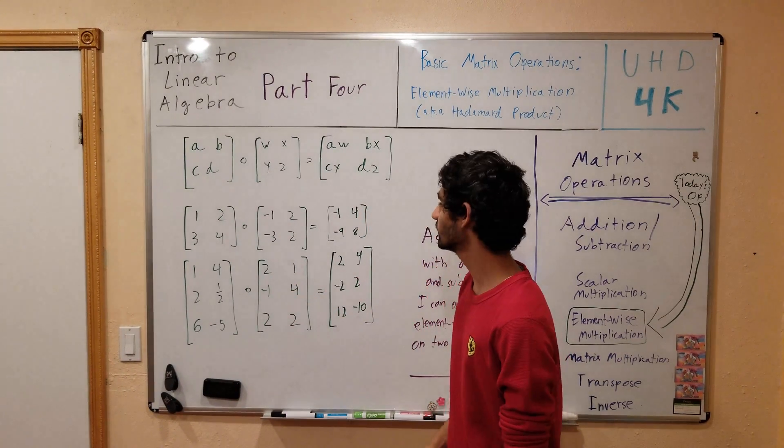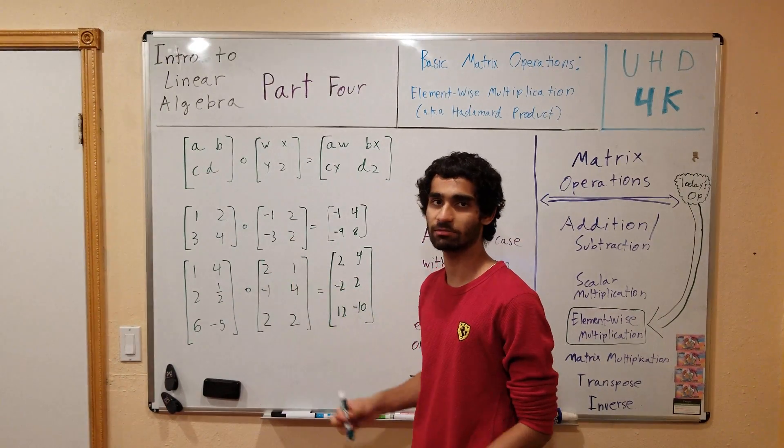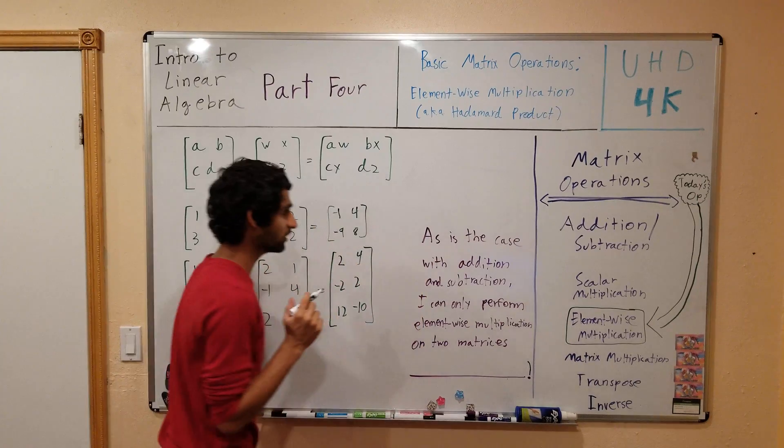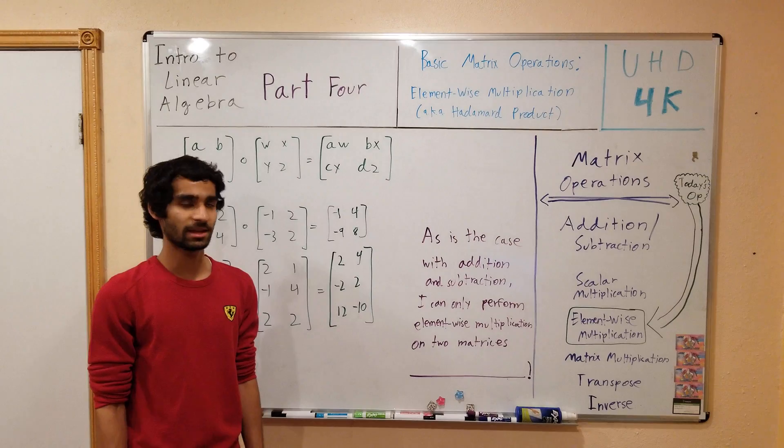Clearly, you cannot take the Hadamard product of two matrices which do not have equal dimensions. So make sure that if you are taking the Hadamard product of two matrices, check that they are of the same dimension.